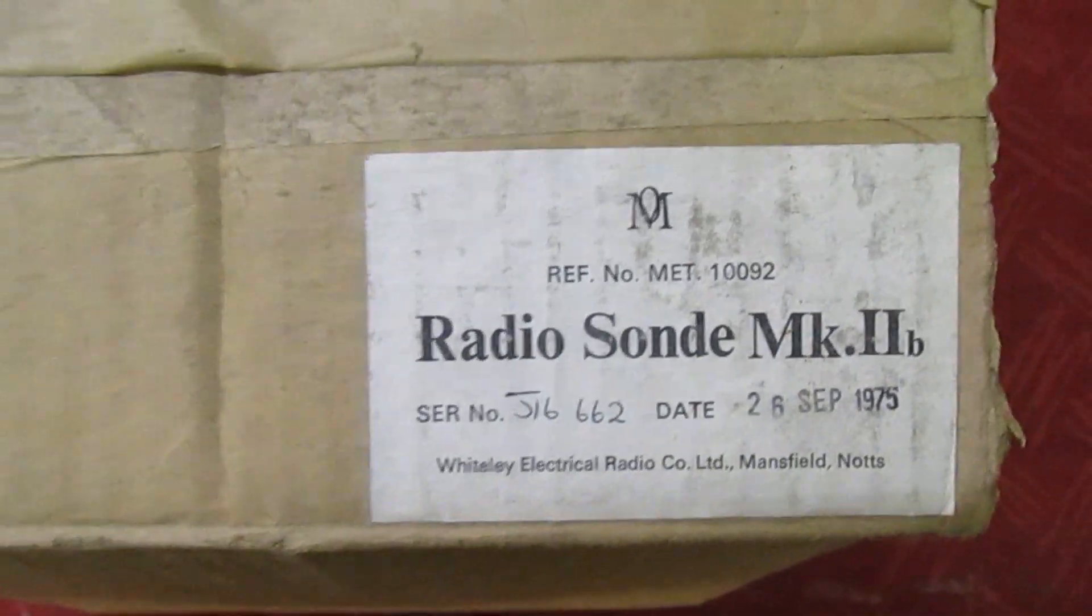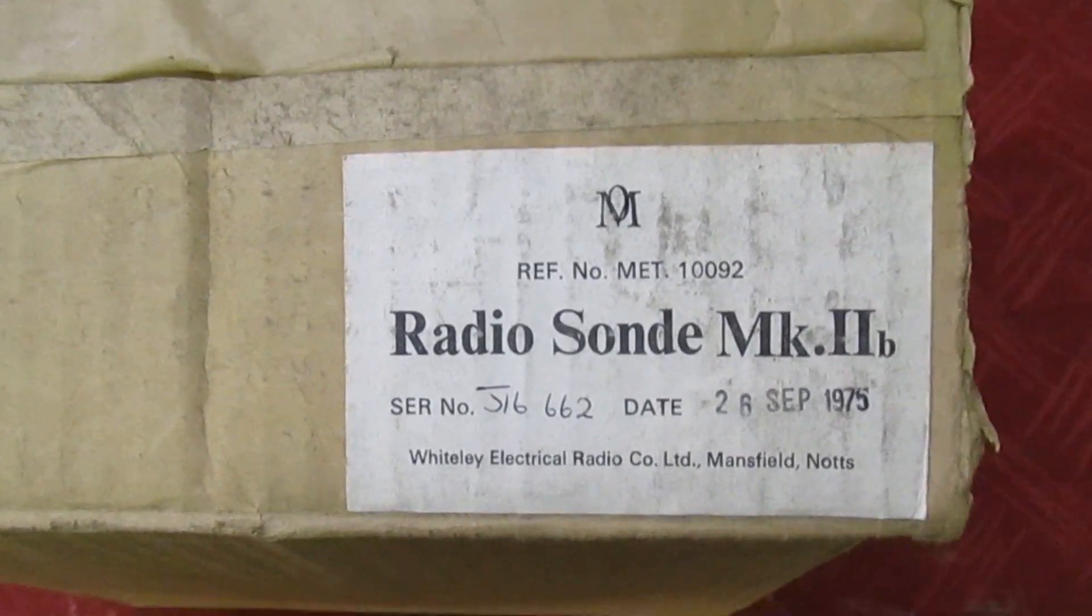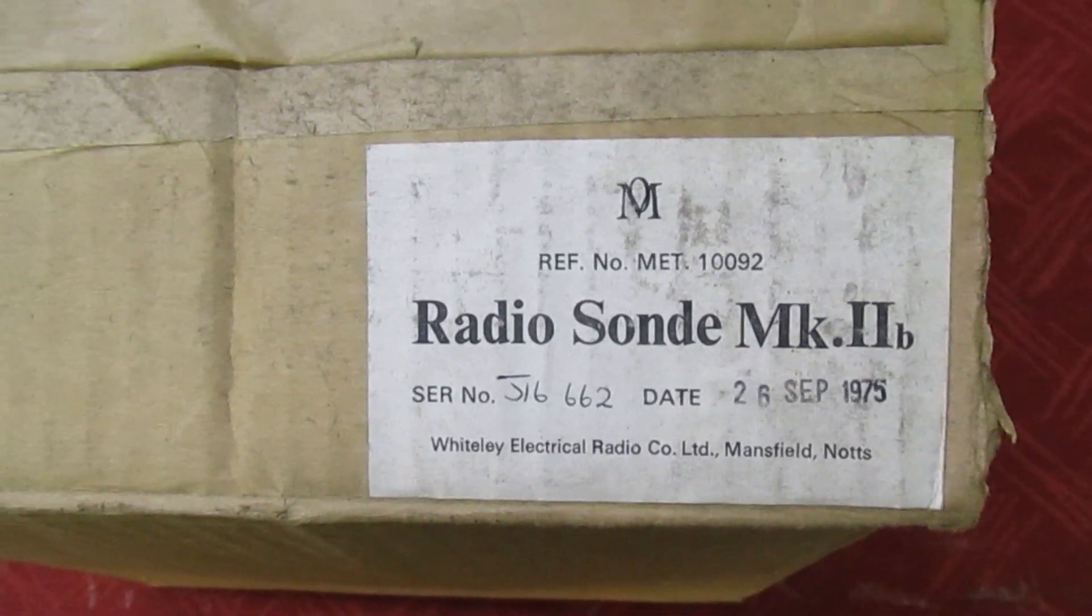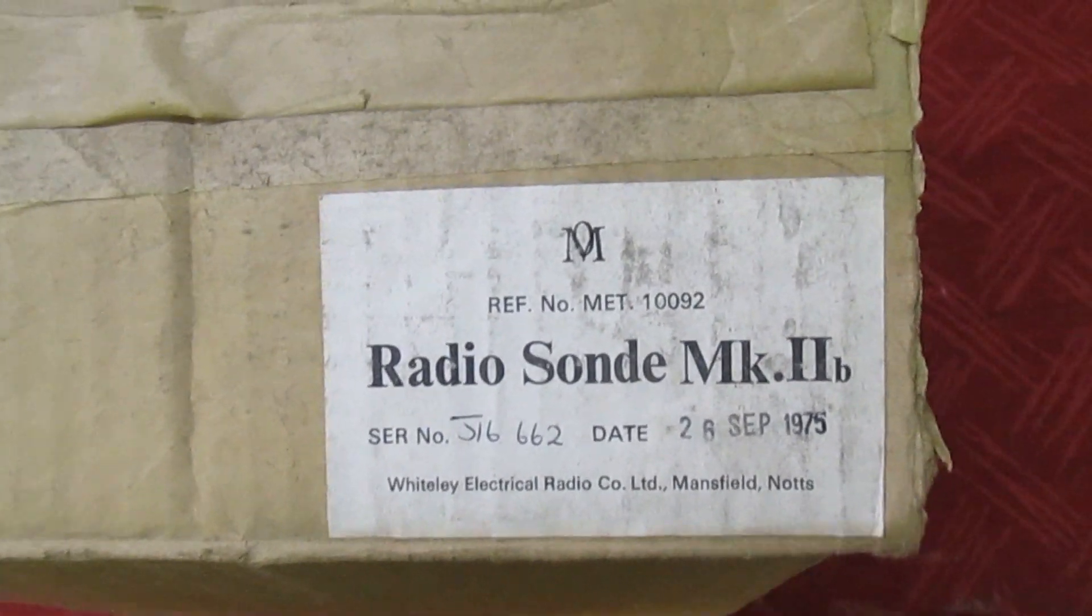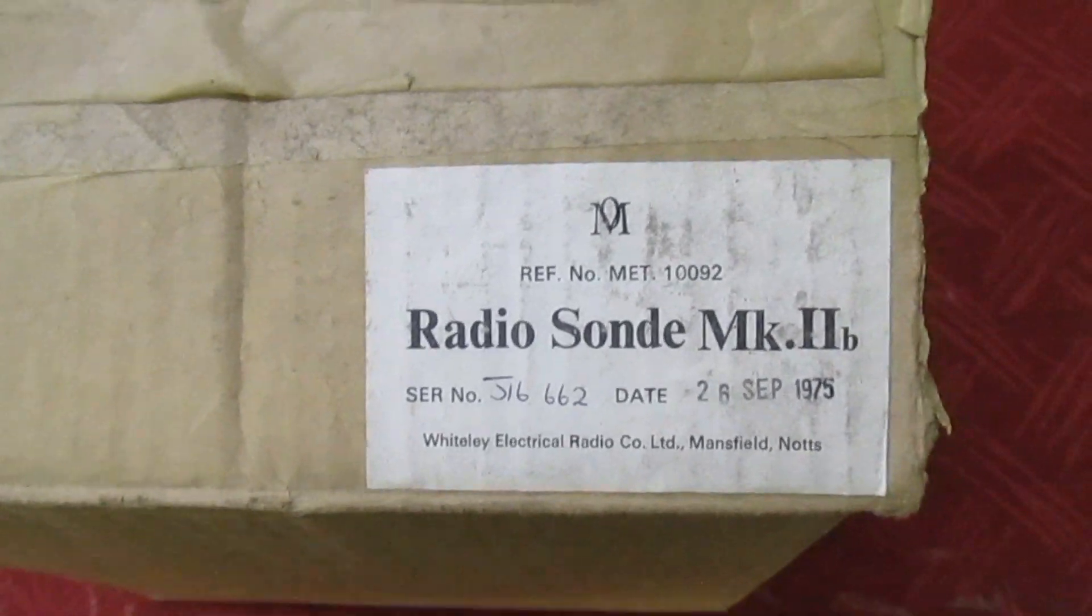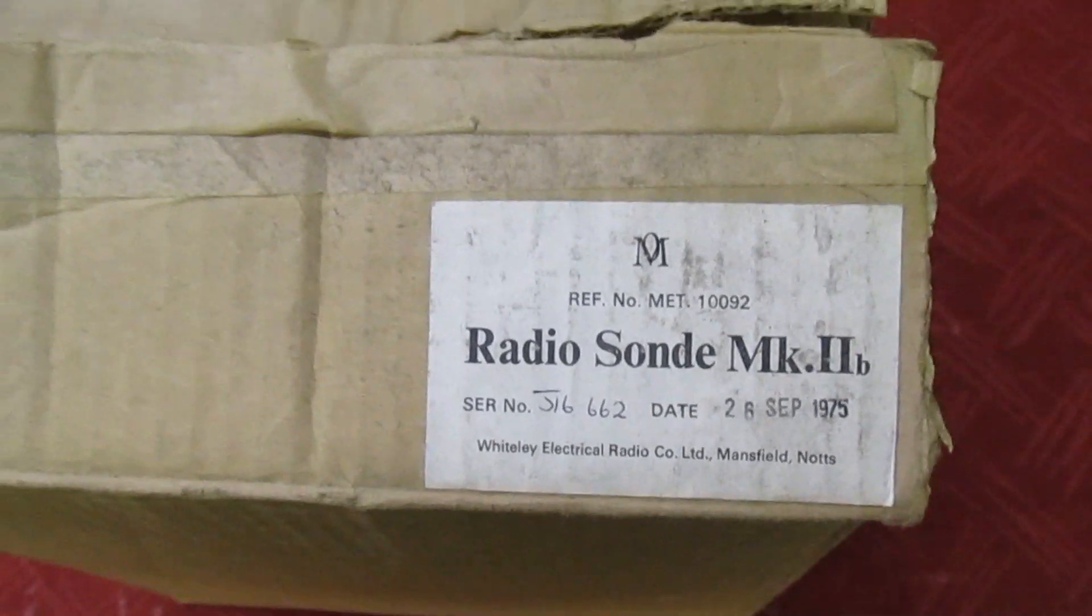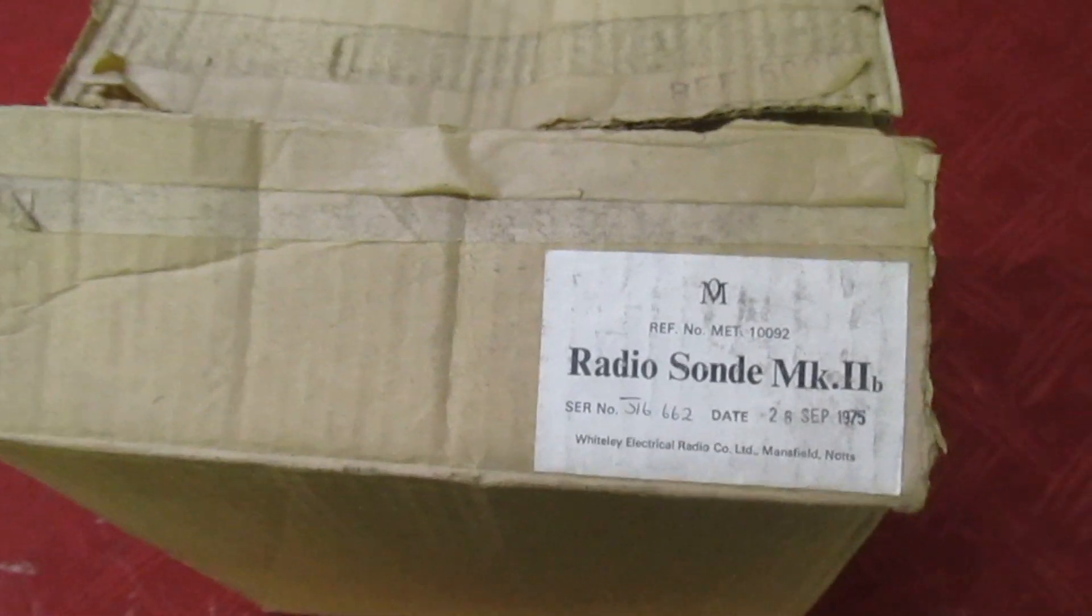It turns out it's a transmitter that you attach to a weather balloon and you send it high up in the sky, and it actually transmits meteorological data about the weather down to a base station on the ground. So let's stop the camera and just have a quick look in the box.